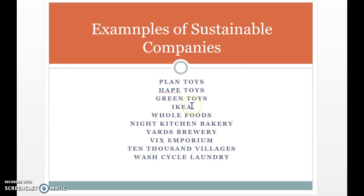Ikea is actually considered one of the most sustainable companies in the world, though they still have a long way to go. Other great examples of local sustainable companies include Night Kitchen Bakery in Germantown, Yards Brewery, Vic Superium, Ten Thousand Villages, and Wash Cycle Laundry — all of which you can research further.